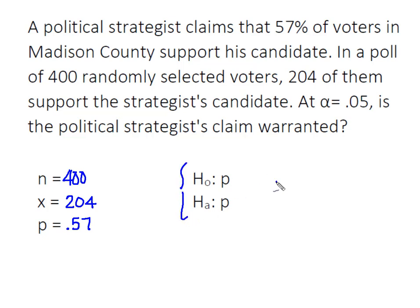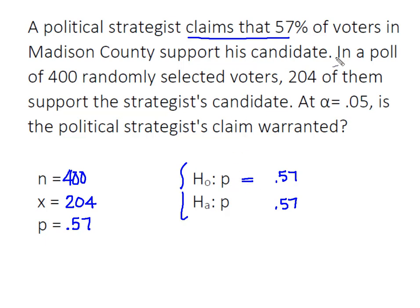So now we can set up our H₀ and Hₐ. The claimed value of the population proportion is 57%, so now we need to set up our signs for the null and alternative. The strategist claims the proportion is equal to 57%, and since we don't have any information about a direction, in the absence of that, HO and HA are mathematical opposites, so that would be a not-equal-to.